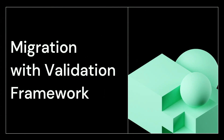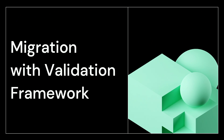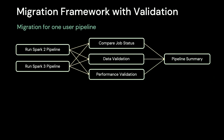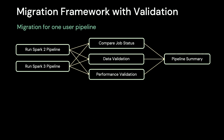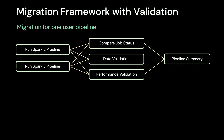Thanks, Jason, for the overview. As Jason mentioned, we care a lot about high data quality and job performance at Airbnb, so we decided to do strict data and performance validation during the migration. However, the migration and validation process is very manual and time-consuming. So here we present how we automate our Spark migration with data and performance validation. This is the flow chart for migrating one pipeline. We use the Airflow testing environment to orchestrate various tasks, and all the validation tasks are auto-generated. During the migration process, we simultaneously run both the Spark 2 and Spark 3 versions of the pipeline. We then compare the final job statuses and do strict data validation and performance validation. In the end, a migration summary is generated — all of this is the foundation for a smooth and successful migration.